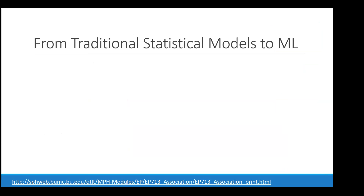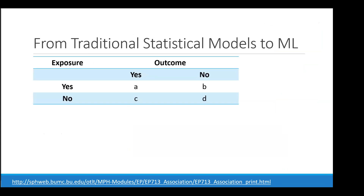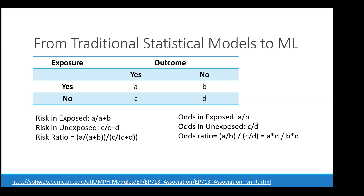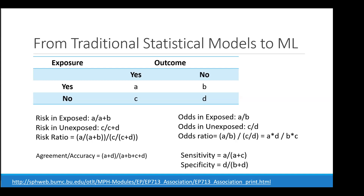For the rest of the talk I want to walk through how and why we might move from a more basic statistical model to a more complex machine learning algorithm. We can start with a simple two-by-two table — also called a confusion matrix in machine learning — where we have a dichotomous exposure and a dichotomous outcome. From this table we can calculate a risk ratio, odds ratio, accuracy, sensitivity, and specificity.